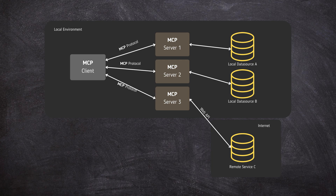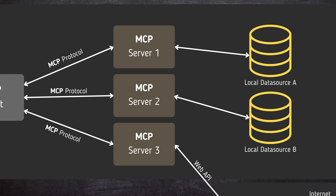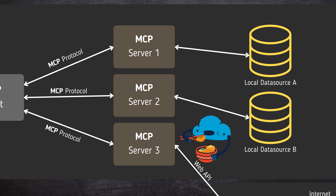The MCP server is an external program or service that exposes specialized capabilities — such as tools, data, or prompts — through the MCP protocol. It wraps around data sources, APIs, or utilities like databases, file systems, CRMs, or cloud services, making them accessible in a standardized way. Servers define and advertise their available capabilities, called primitives.